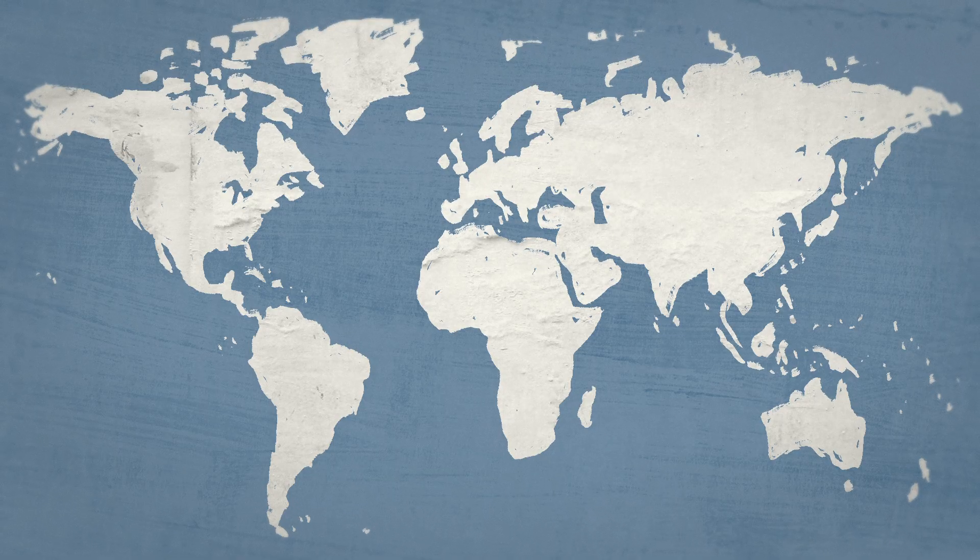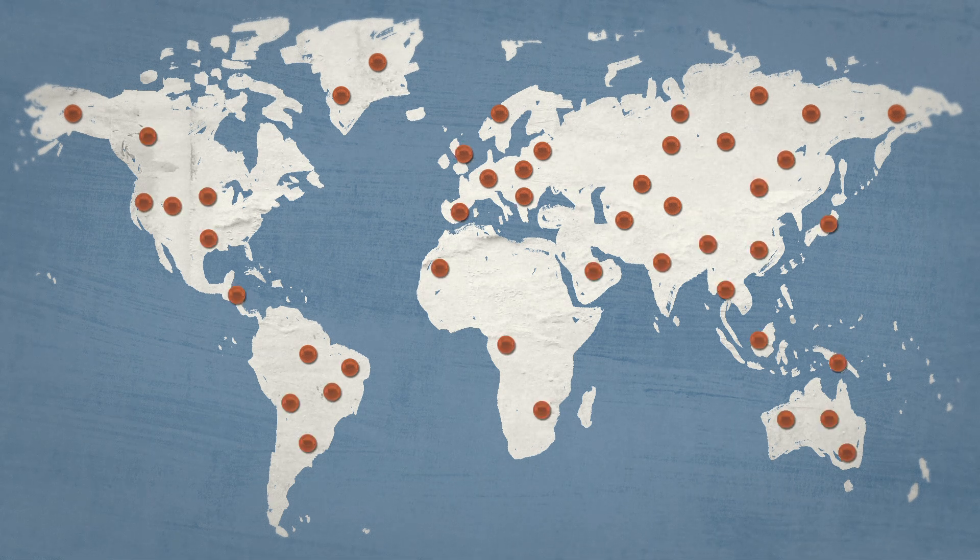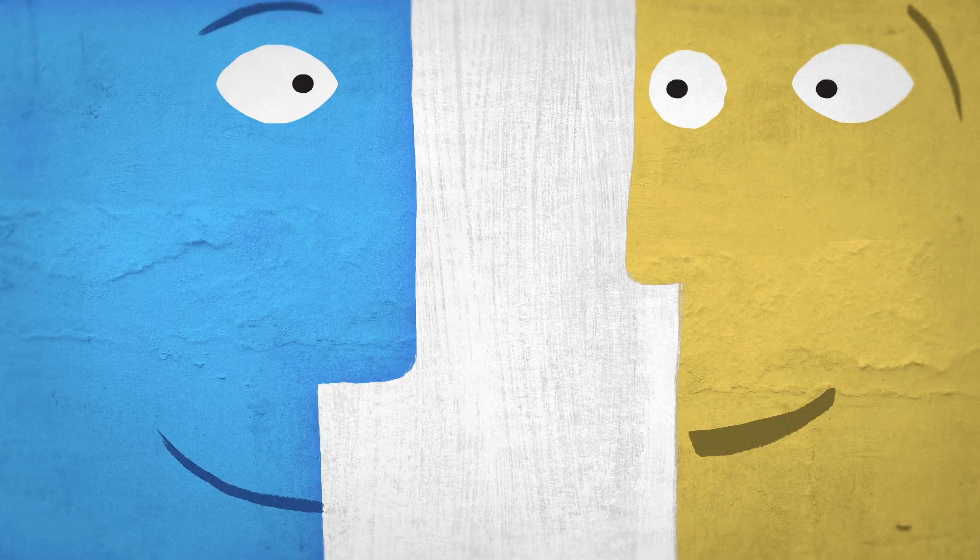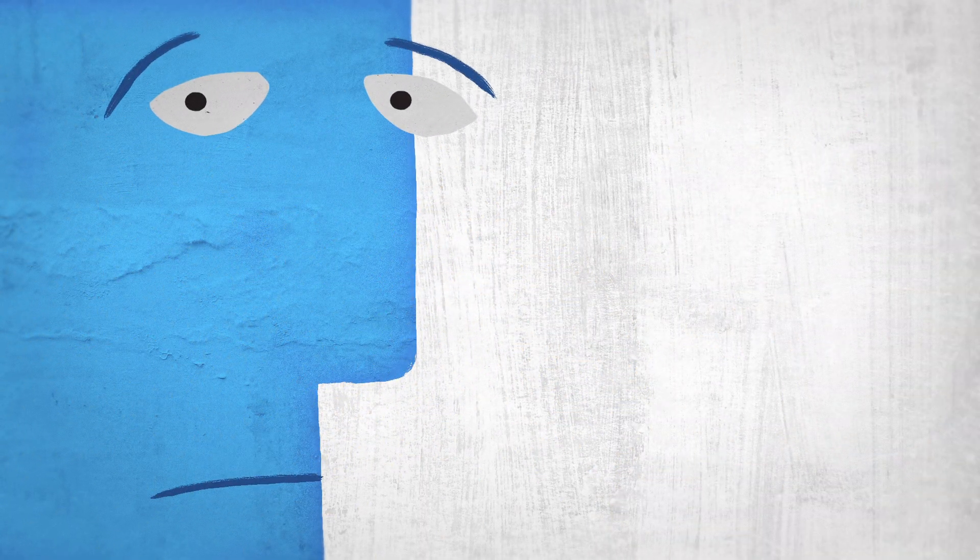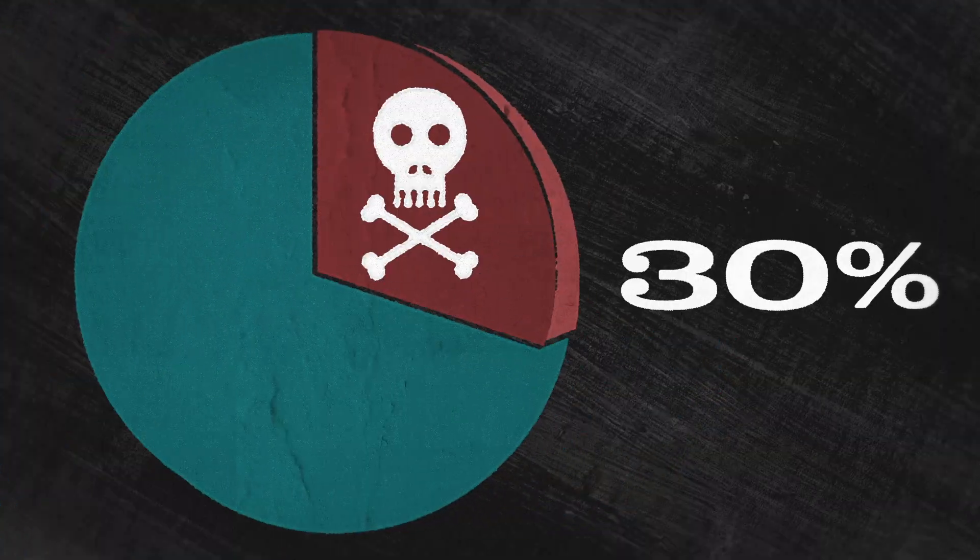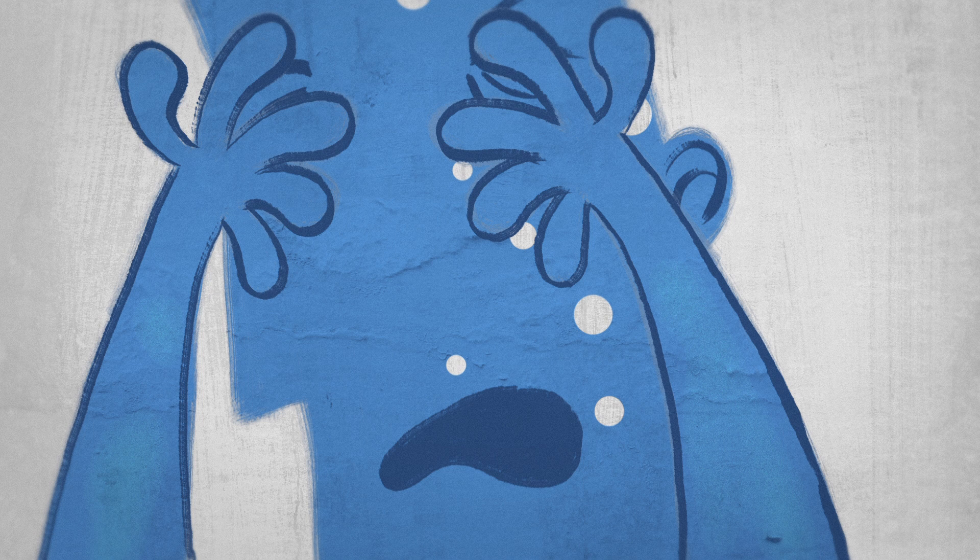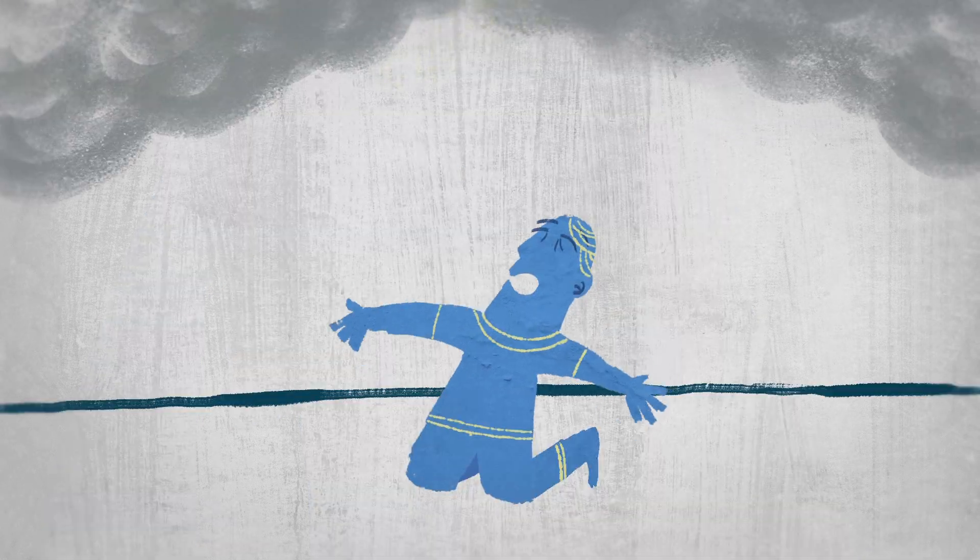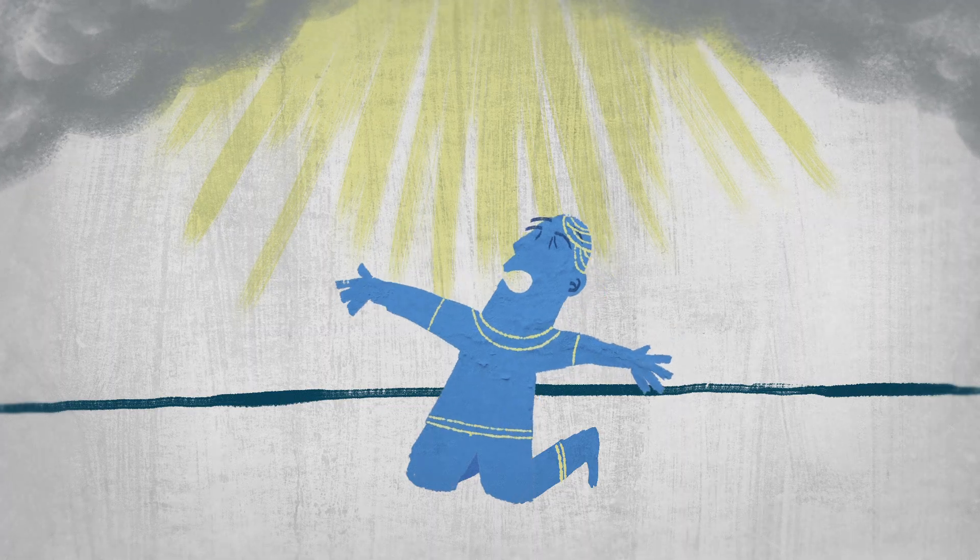Smallpox emerged in human populations thousands of years ago as a contagious virus that spread rapidly, primarily through close face-to-face contact. Causing fever, aches, and rashes, it killed up to 30% of its victims and often left survivors with lifelong disfiguring scars. The devastating impact of smallpox was so great that several cultures had religious deities specifically dedicated to it.